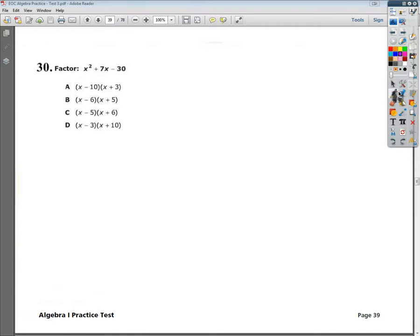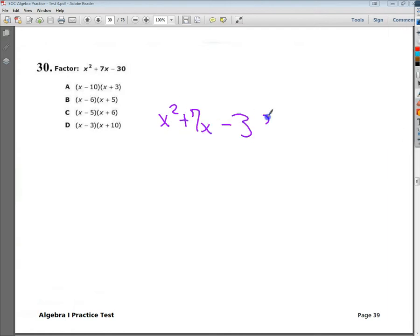I mean theoretically you could just graph it in the calculator, find the roots and switch the signs, but whatever. Anyway, so I'm going to do x squared plus 7x minus 30. The first thing I do when I have to factor this type is look for a common factor, there isn't one.